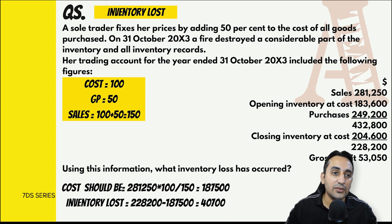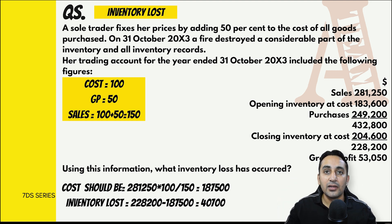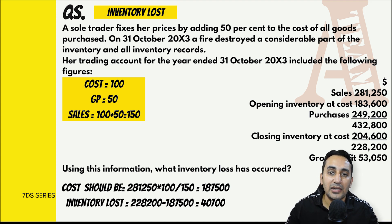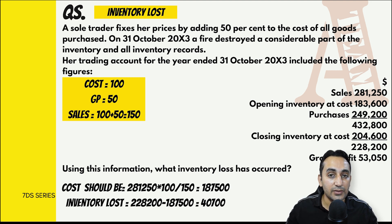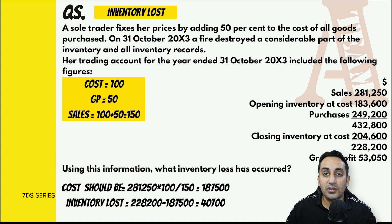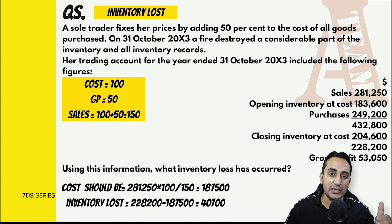इस हिसाब से cost का calculation कर सकते हैं और actual cost से compare कर सकते हैं। Closing stock जब होता है तो cost of goods sold को कम करता है। हमारे हिसाब से जितना माल बेचा - 281,250 - उस हिसाब से cost of goods sold निकालते हैं। Sales का figure दिया है तो denominator में sales का equivalent 150 होगा। Cost निकालनी है तो: 281,250 × 100/150 = 187,500।